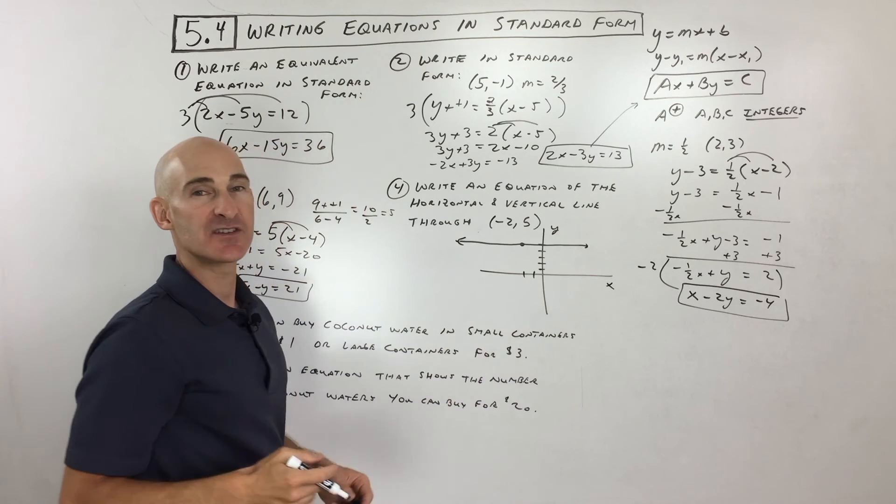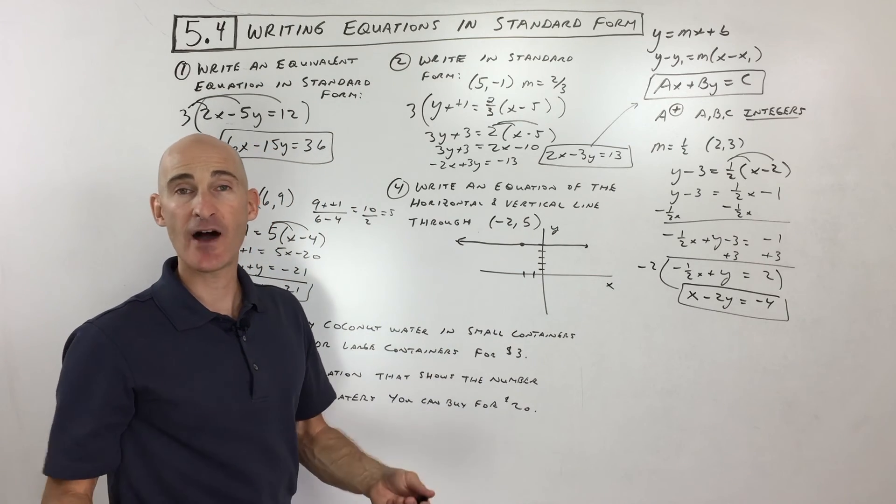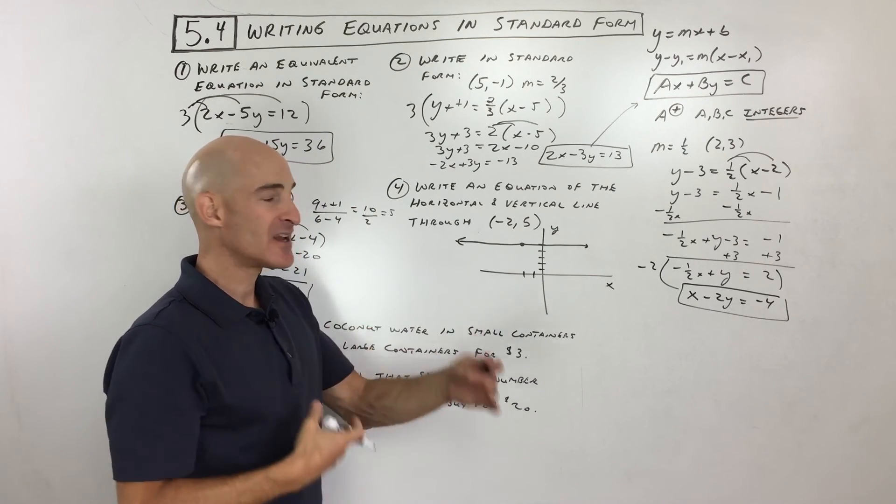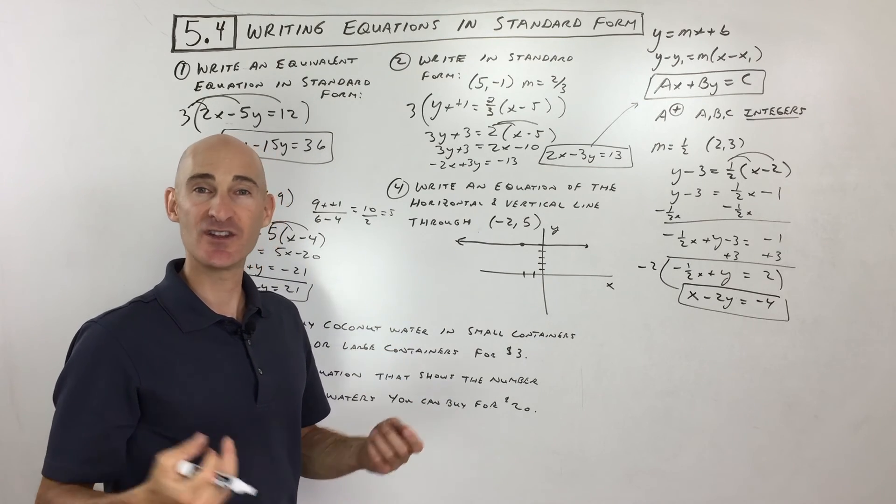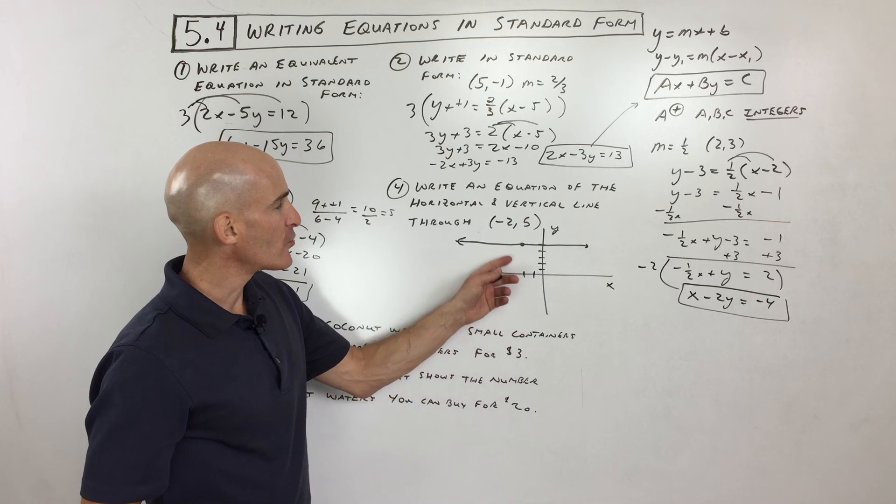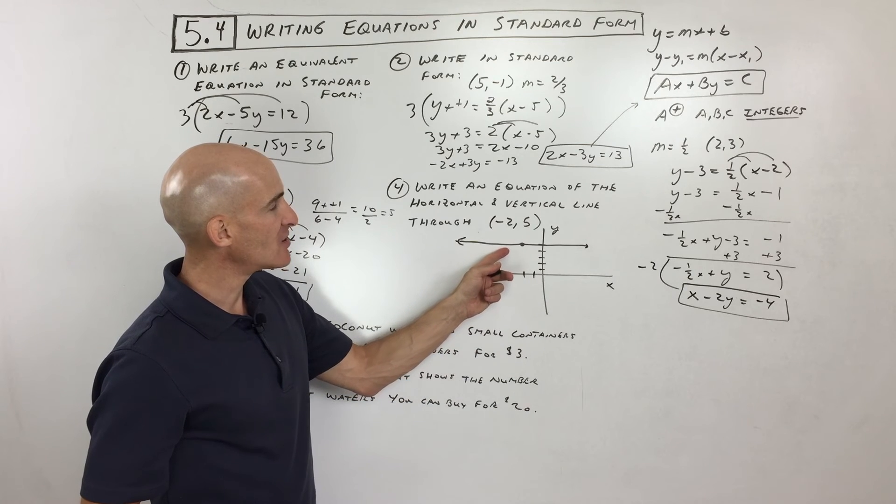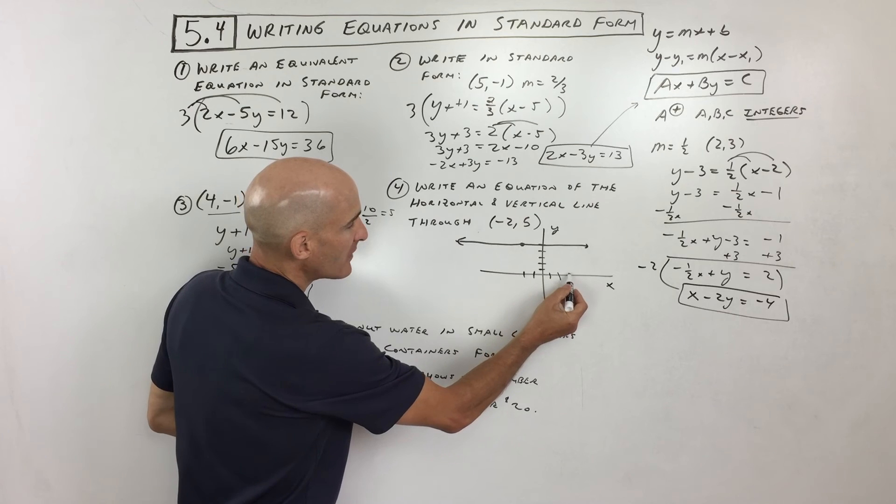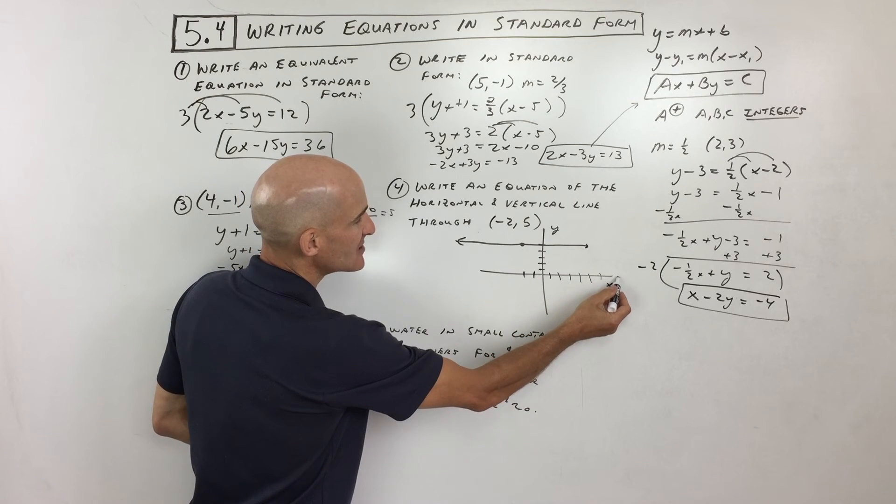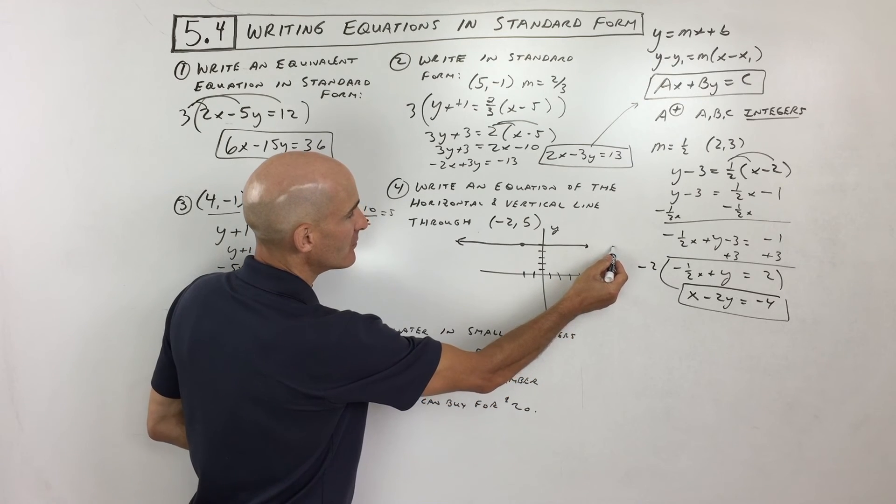And one thing that you're going to notice, and we talked about this in a previous lesson, and that's the nice thing about this course in algebra and math in general, is we tend to cycle through some of the same ideas to reinforce them so that you can memorize them, right? So do you remember this from an earlier section? What's the equation of this horizontal line? Okay, well, notice no matter what the x value is, so even if x is 10, what's y equal to? 5, right?